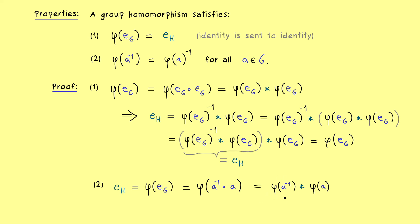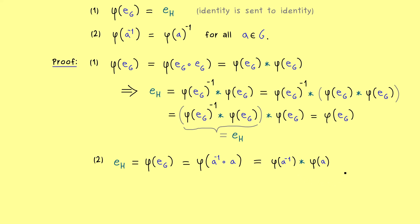Therefore, we can conclude that this element here is the inverse of that element. So in the formula, this reads φ of a inverse is given as φ(a) inverse. So what you can remember here is that a group homomorphism allows us to pull out the inverse sign.